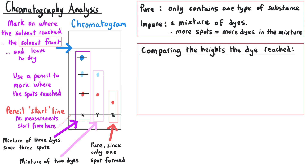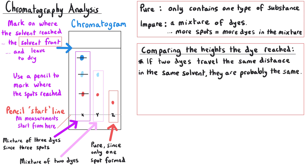Another way we can use our chromatogram is by comparing the substances in different samples. For instance, substance X and substance Y didn't have the same number of substances, but their red coloured dye appeared to travel the same distance up the paper — that suggests they are the same dye. Substance Z had a red coloured dye but it must have been a different red dye, because it didn't travel to the same height as X and Y, which suggests it's a different dye.